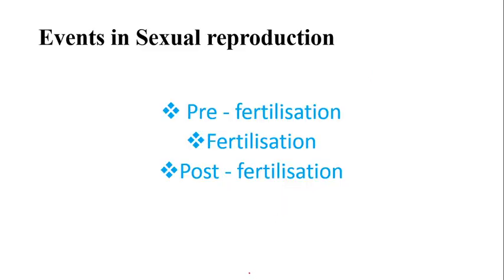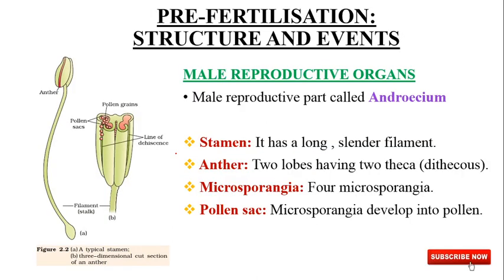Before starting, I want you to know that the events of sexual reproduction are divided into: pre-fertilization, during which the reproductive organs are preparing themselves for fertilization and preparing their gametes; then fertilization, when the gametes come together and fuse to form the zygote; and during post-fertilization, the zygote develops into an embryo. We will talk about those events in future videos. Now we will talk about the male reproductive organs, which are known as androecium.